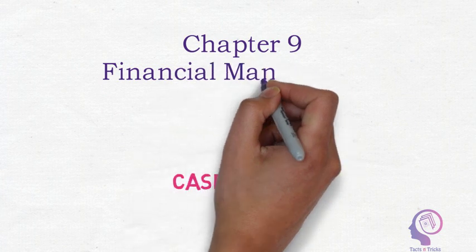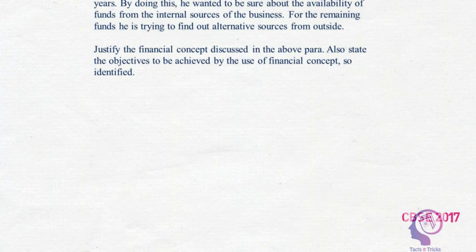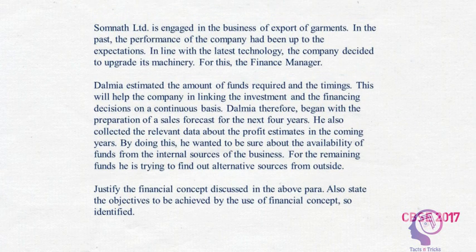Let us discuss case study 1 from chapter 9, Financial Management. This case study is taken from the CBSE examination 2017. In order to understand the case study easily, first we need to understand the ultimate question. In the last paragraph, the ultimate question is to justify the financial concept discussed in the above paragraph, and also state the objectives to be achieved by the use of that financial concept. So this case study is all about identifying a financial concept.